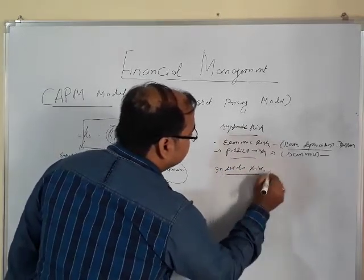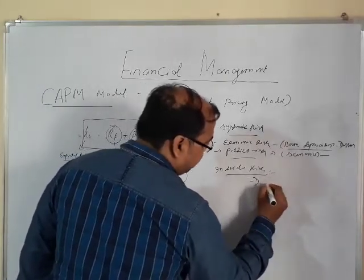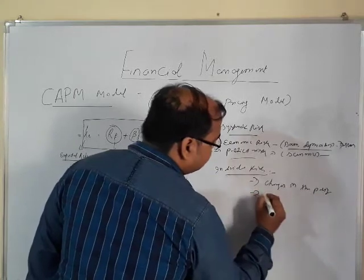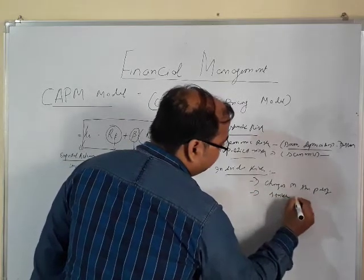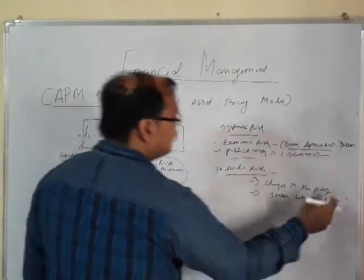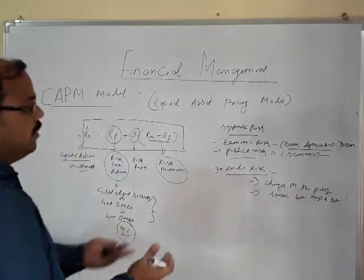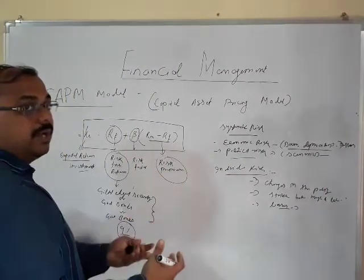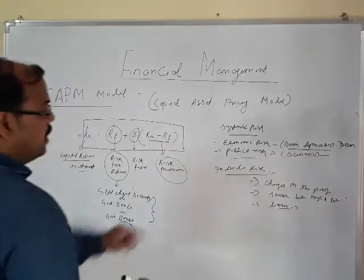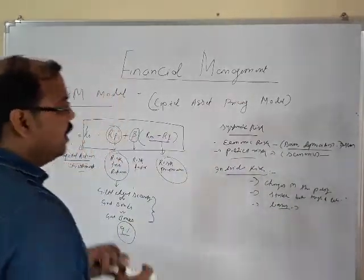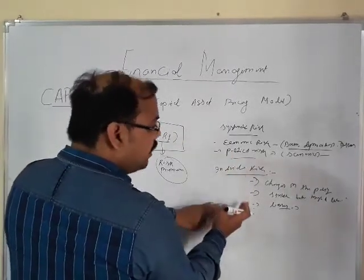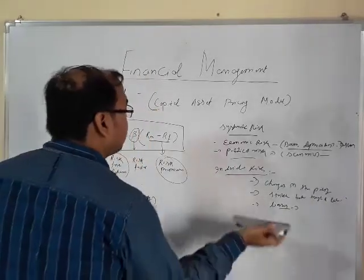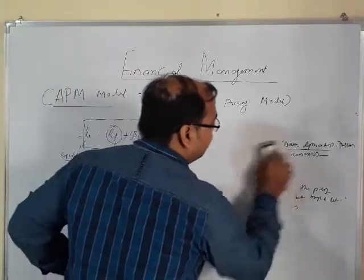Individual risk for a firm includes things like policy changes, strikes between management and labor force, or a firm suffering losses for the last two years. These individual risk factors do not impact the market as a whole, but the individual firm also has some exposure to systematic market risk as well.